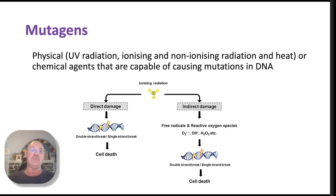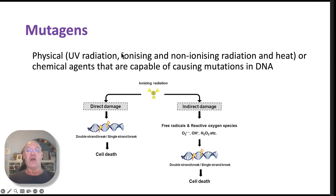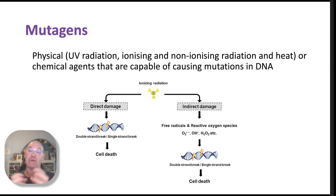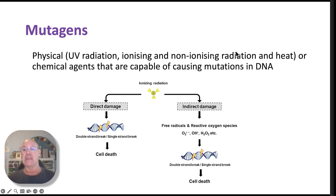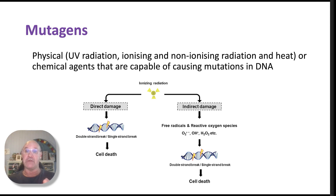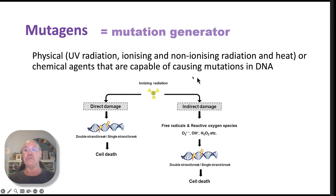One of the things that can cause gene mutations are mutagens — physical or chemical agents capable of causing mutations in DNA. Physical mutagens include UV radiation, which can cause skin cancer; ionising radiation such as gamma rays and alpha and beta radiation from radioactive decay; non-ionising radiation; and heat. There are also chemical agents — chemicals in cigarette smoke, certain drugs, pesticides and similar substances can be mutagenic and cause mutations in DNA.